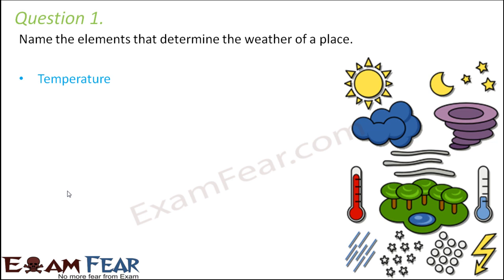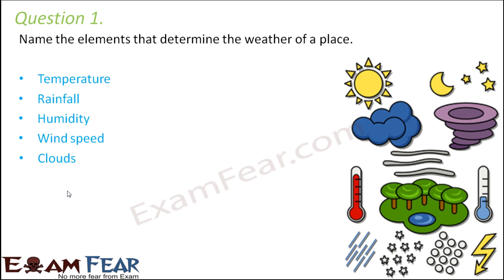If the temperature is very high it is hot; if the temperature is very low, that weather is cold. Rainfall — too much rain means the weather is rainy. Humidity is the amount of moisture present in the environment, and normally humidity is high before and after rainfall. Wind speed — sometimes it is extremely high, making the weather unpleasant. Clouds — whether it's a cloudy day or not depends on the presence or absence of clouds.